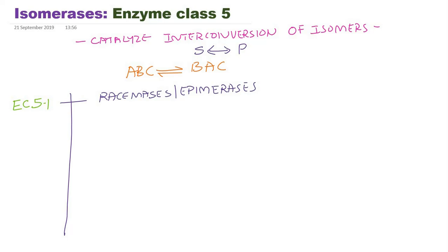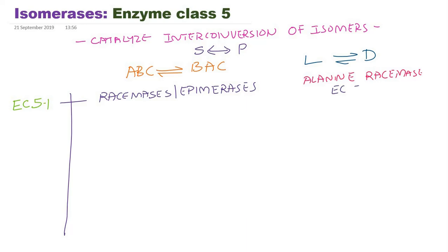An example for this particular subclass is alanine racemase. This enzyme converts L-alanine to D-alanine. The EC number for this particular enzyme is 5.1.1.1, as it is the first enzyme of this classification.